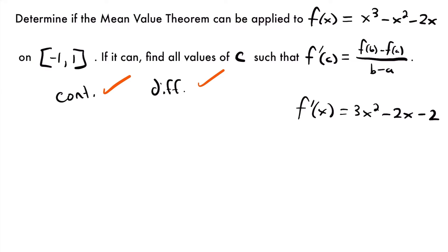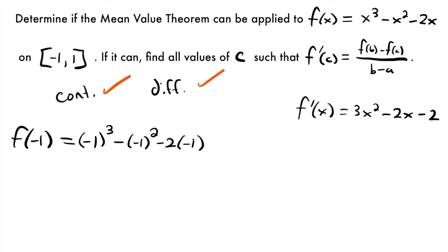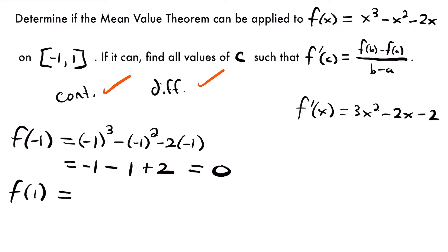Now we're ready to find the slope between our two endpoints. We'll start by plugging in our endpoints to find f of b and f of a, which in this case is going to be f of 1 and f of negative 1. So we'll plug in negative 1: f of negative 1 is equal to negative 1 cubed minus negative 1 squared minus 2 times negative 1. This reduces to negative 1 minus 1 plus 2, because negative 2 times negative 1 is positive 2. So negative 1 minus 1 is negative 2, plus 2 equals 0.